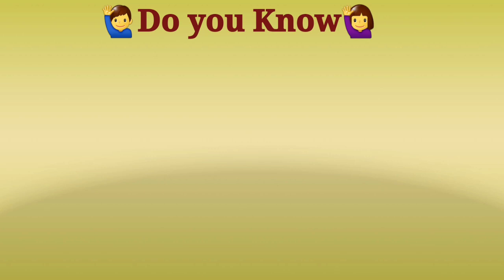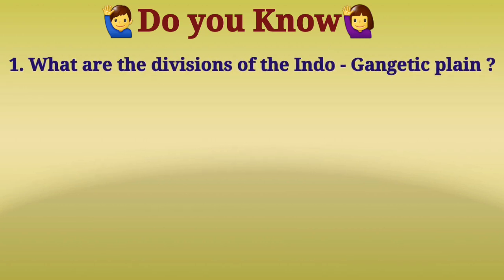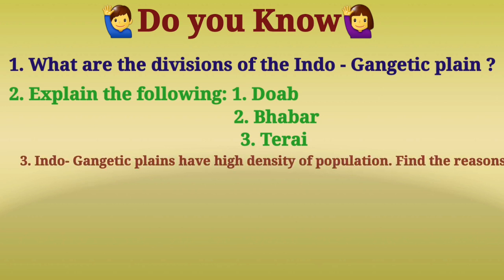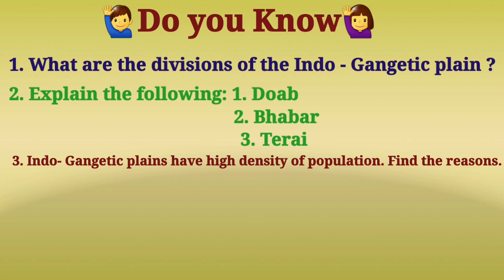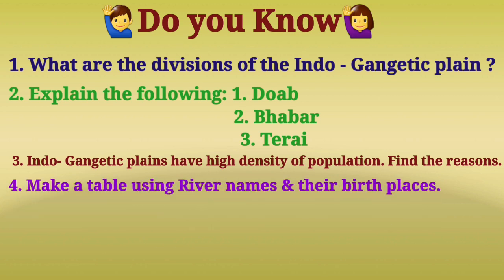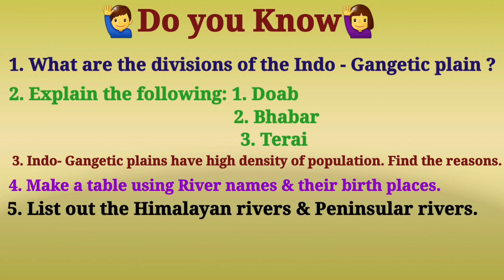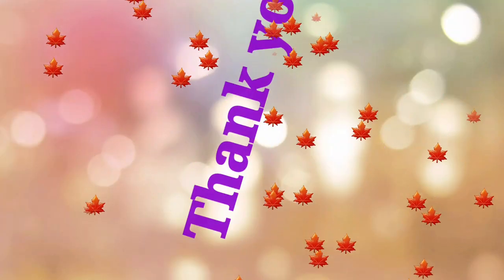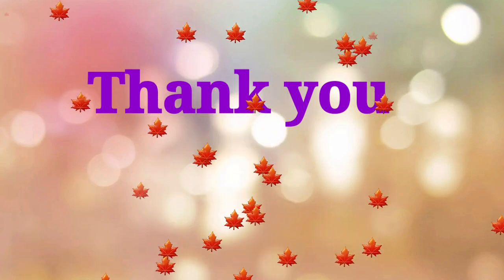I hope you understood this part very well. Let us check your knowledge: What are the divisions of the Indo-Gangetic Plain? Explain the keywords Doab, Bhabar, and Terai. Indo-Gangetic Plains have high density of population — find the reasons. Make a table using river names and their birthplaces. List out the Himalayan rivers and Peninsular rivers, then locate the given rivers on the India map. Watch this video again and again until the next video. Thank you all.